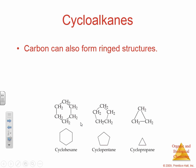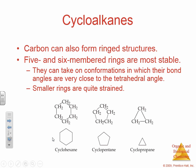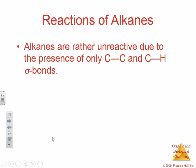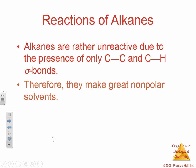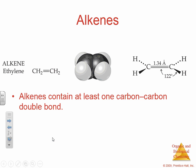We also can have cycloalkanes, which are circular ring structures — cyclohexane, cyclopentane, cyclopropane. We'll talk about aromatic structures next. Carbons love to form five and six-membered rings. Alkanes are rather unreactive because they have a bunch of single bonds — sigma bonds — and therefore they make great non-polar solvents.